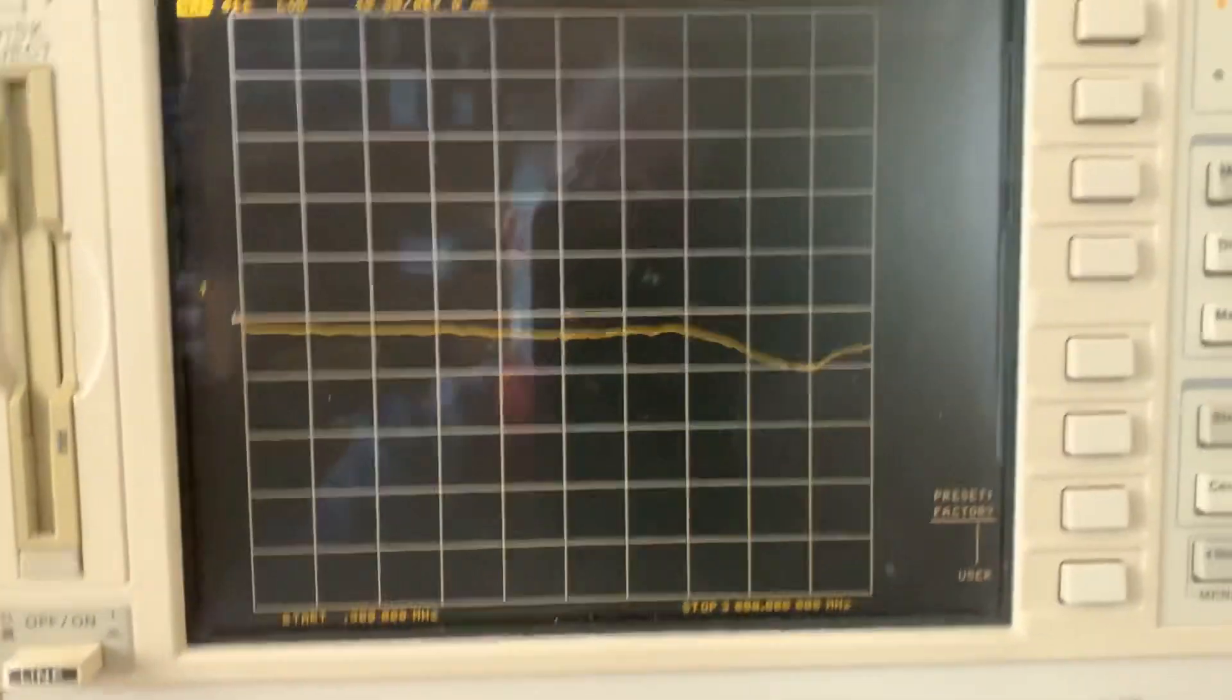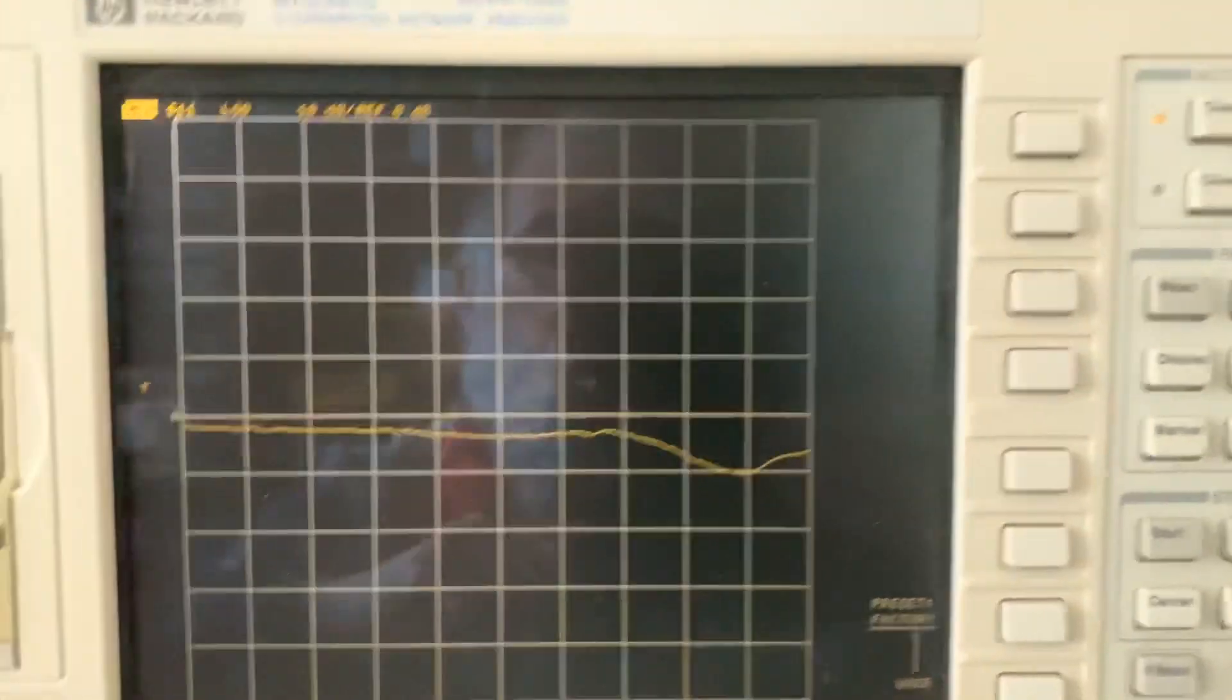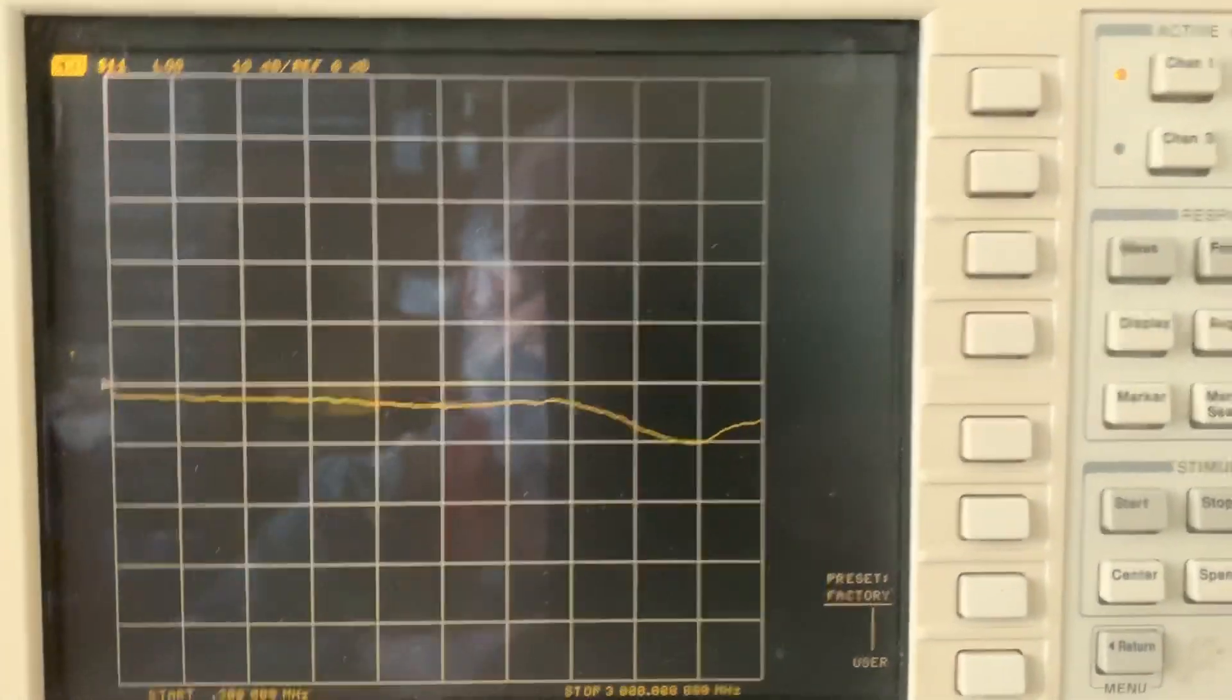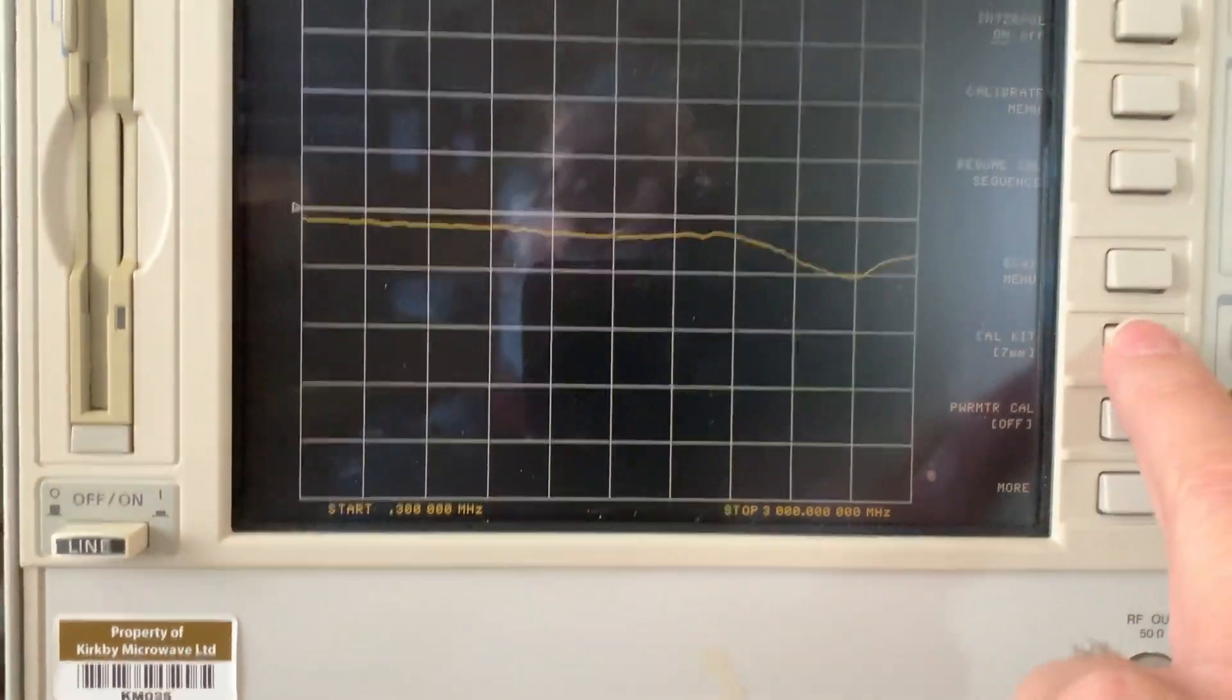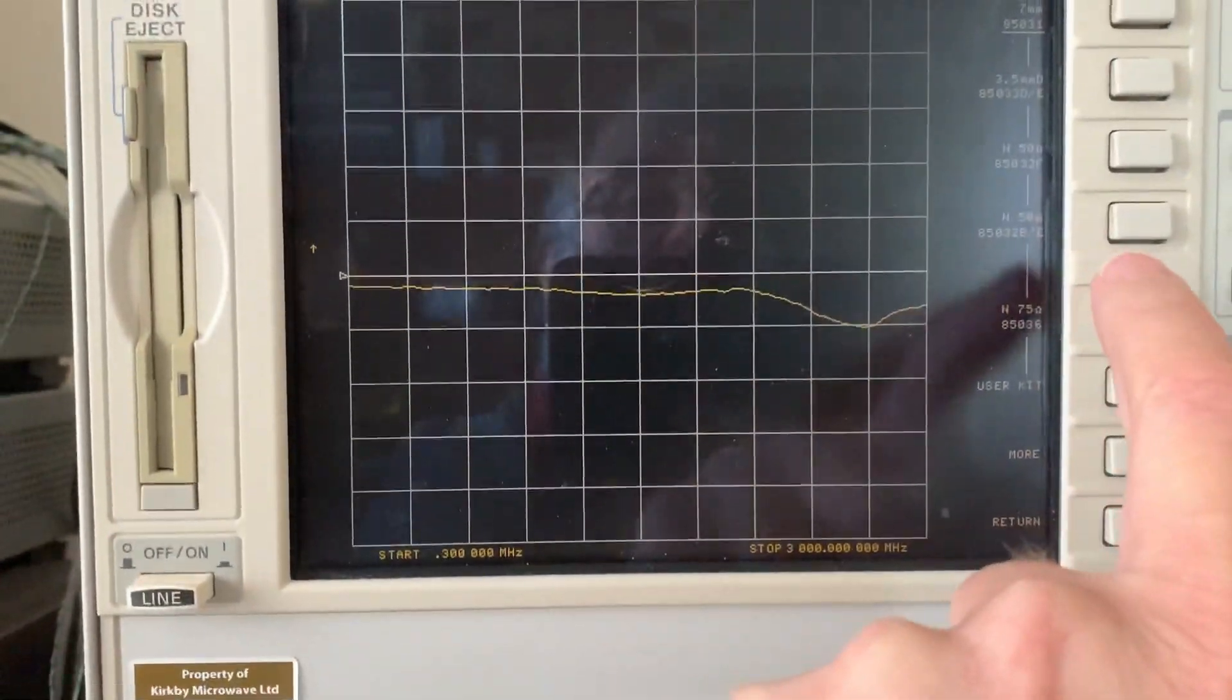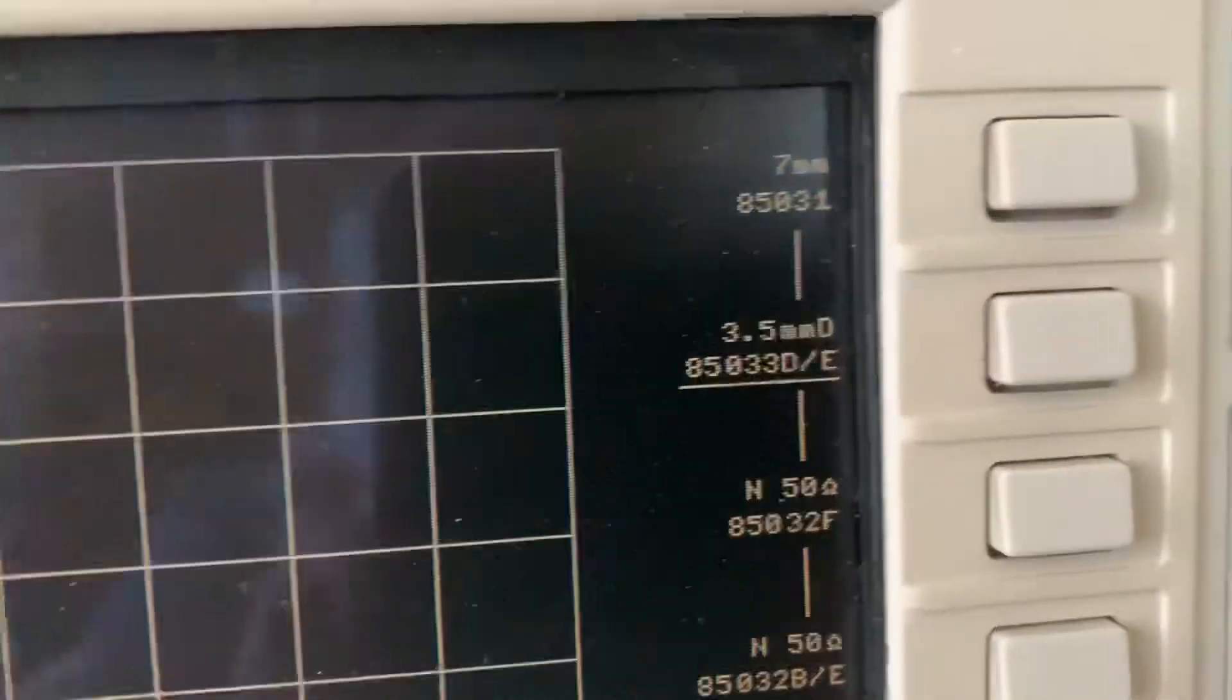I'm going to select a 3.5mm calibration kit as that's the nearest we've got to an SMA. Cal kit, select cal kit, 3.5 millimeters. That's 3.5 millimeters.